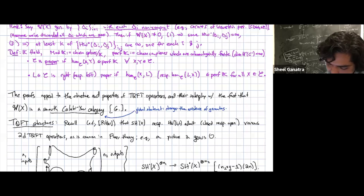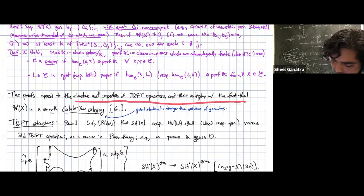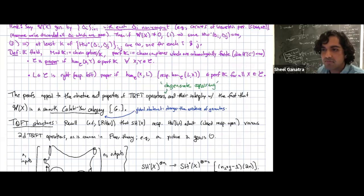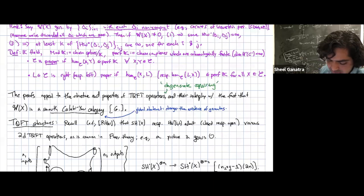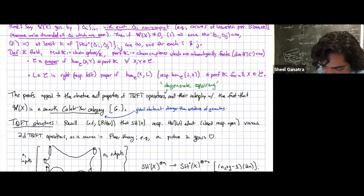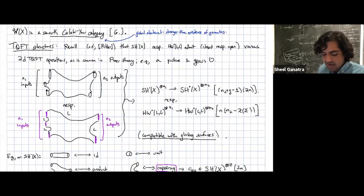The proofs appeal to the structure and properties of TFT operations. In particular, I want to highlight the role played by a co-pairing and the fact that it's degenerate, and how these interact with the fact that the wrapped Fukaya category is a smooth Calabi-Yau category — a theorem I proved in my thesis assuming precisely these hypotheses.